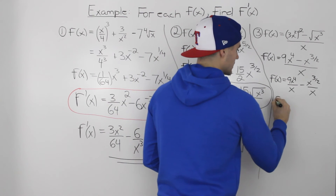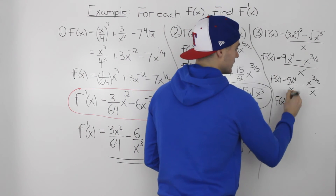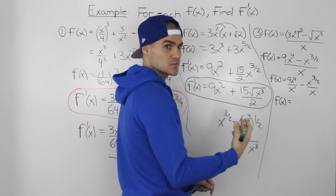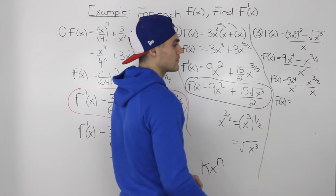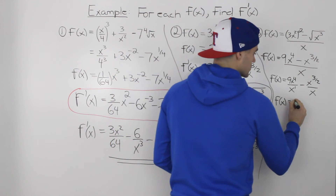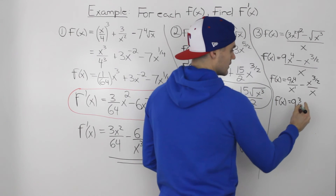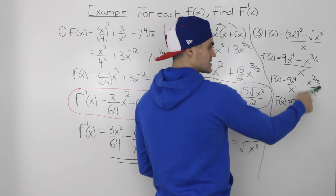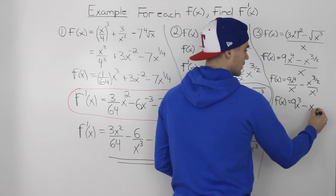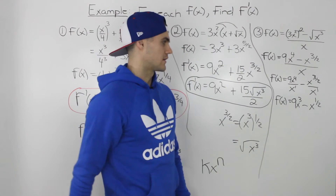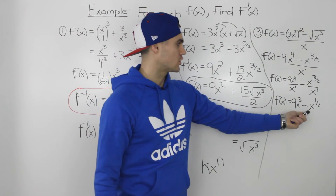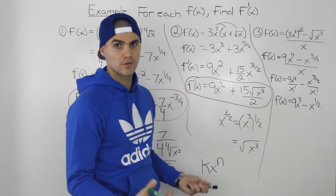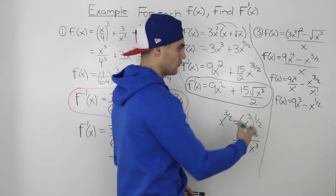We can now simplify each fraction. For 9x⁴ divided by x¹: subtracting exponents gives 9x³. For x^(3/2) divided by x¹: subtracting exponents gives x^(1/2). So the function simplifies to 9x³ - x^(1/2). Each term is now in the standard format, so we can apply the power rule.